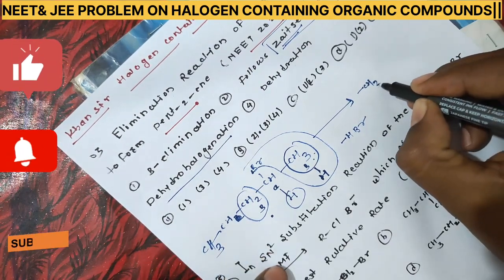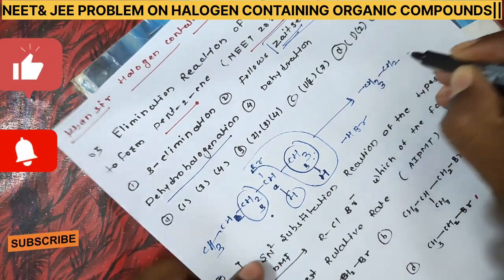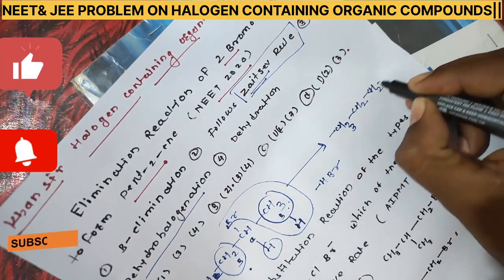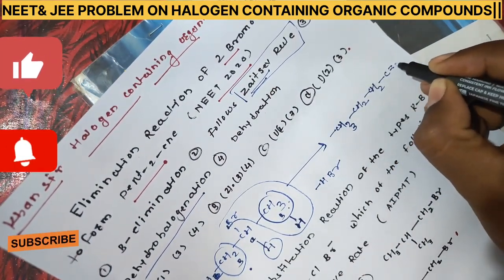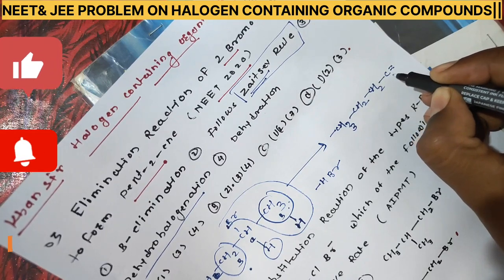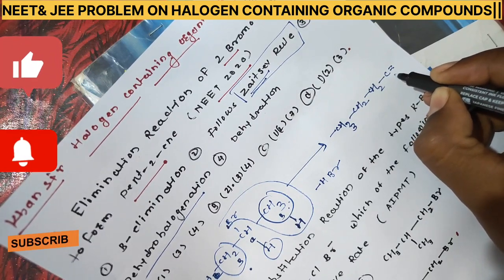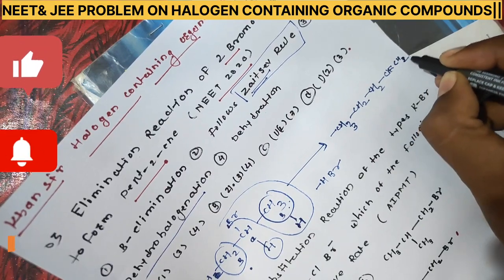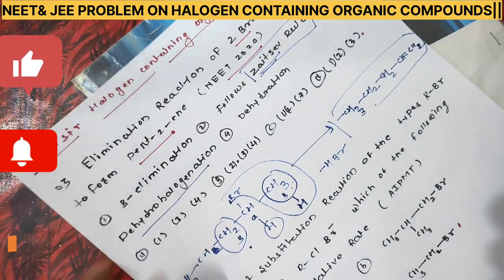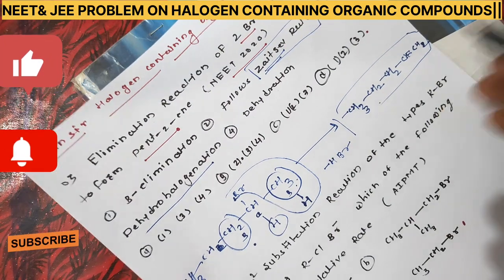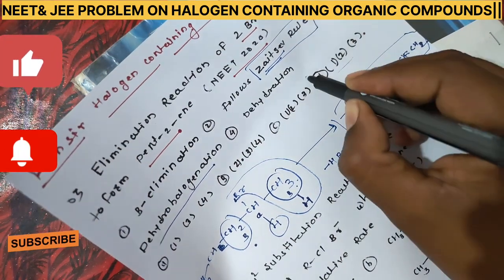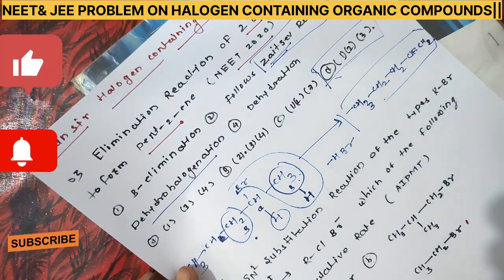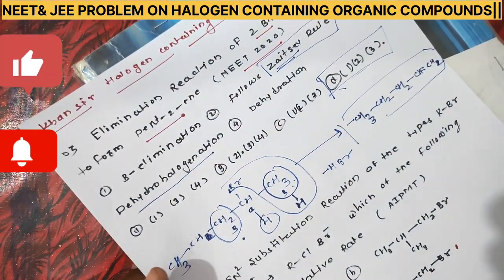The product is CH₃–CH₂–CH=CH–CH₃, which is 2-pentene. So option number D is correct: the sequence is beta elimination, Zaitsev's rule, and dehydrohalogenation. I hope you understood this.